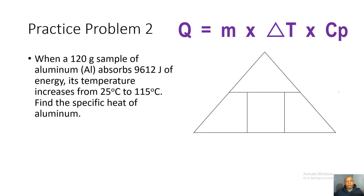Practice problem two: when a 120-gram sample of aluminum absorbs 9,612 joules of energy, its temperature increases from 25 degrees Celsius to 115 degrees Celsius. Find the specific heat of aluminum. So 120 grams is our mass.